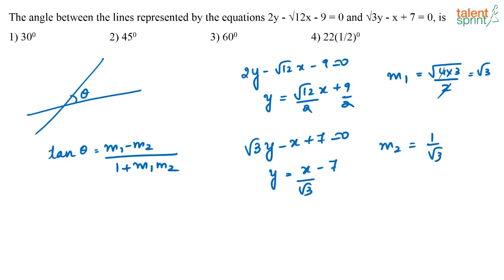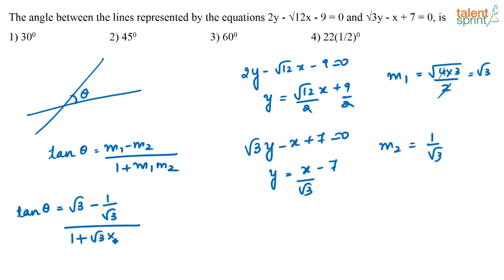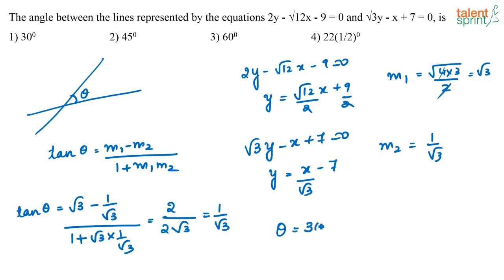The angle formed between the two lines is theta, so tan theta equals m1 minus m2, that is root 3 minus 1 by root 3, divided by 1 plus root 3 into 1 by root 3. This simplifies to 3 minus 1 over 2 root 3, which equals 2 by 2 root 3, equal to 1 by root 3. Since tan theta equals 1 by root 3, theta equals 30 degrees.